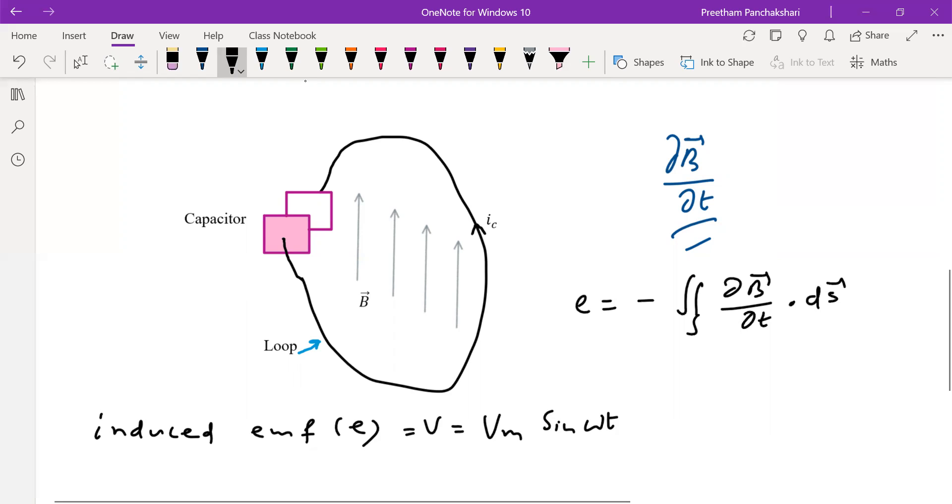This induced EMF induces a current, that is induced current in the conducting path of the closed circuit. The conducting path indicated in black is carrying the current IC. That is the induced current passing through the circuit containing the capacitor.